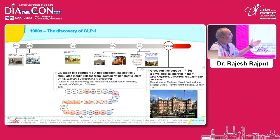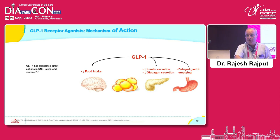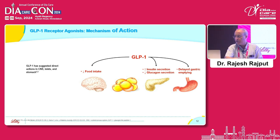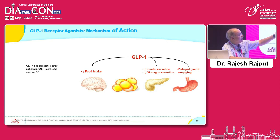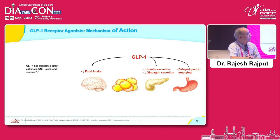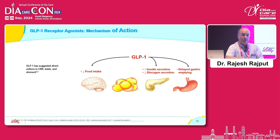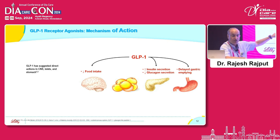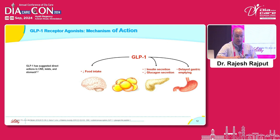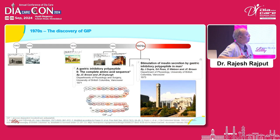Regarding GLP-1 actions: when GLP-1 is secreted inside your body, it acts on the pancreas causing glucose-dependent insulin secretion. It also suppresses glucagon secretion — this suppression is uniform regardless of dose or plasma glucose level. GLP-1 only suppresses plasma glucagon. It also delays gastric emptying and acts on the central nervous system to decrease food intake. These properties form the basis on which various GLP receptor agonists have been developed.